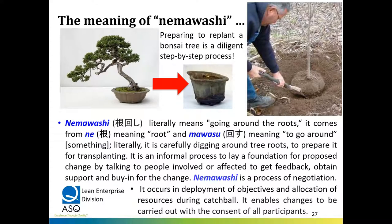We begin with Nemawashi, which means preparing to replant a bonsai tree — literally going around the roots, from ne meaning root and mawashi meaning to go around something. It's carefully digging around the roots to prepare for transplanting. In Hoshin, it's an informal process to lay a foundation for proposed change by talking to people involved or affected — to get feedback, obtain support, and buy-in before formally promoting the change. Nemawashi is a process of negotiation that occurs in deployment of objectives and allocation of resources during catchball, enabling changes to be carried out with the consent of all participants.